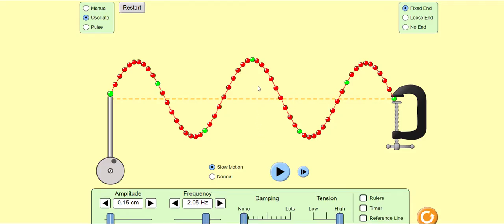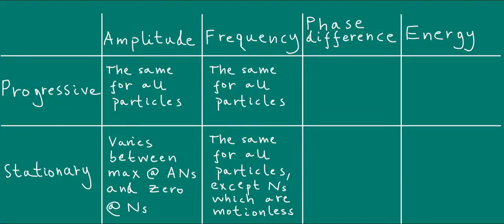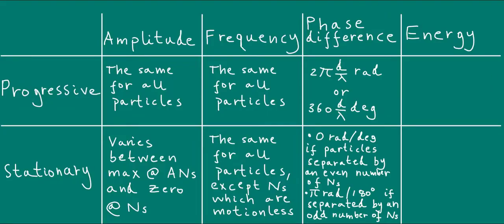Let's add all of these observations to our table. Just to be absolutely clear: because the particles at nodes are motionless — meaning they have zero frequency — it makes no sense to talk about the phase difference between nodes, or between nodes and other points which are actually moving.